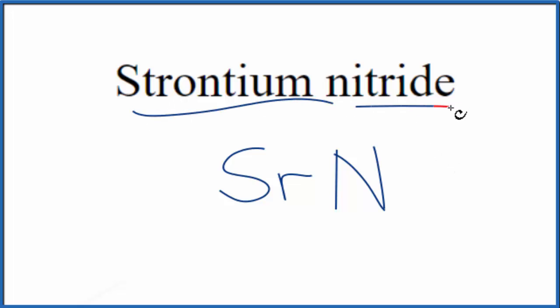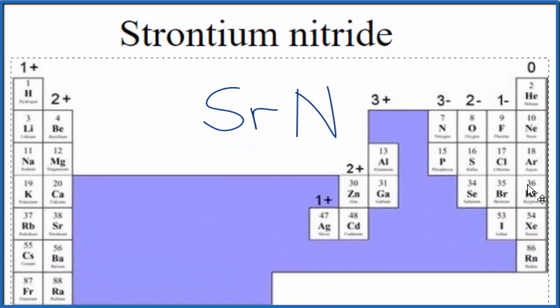Since we have a metal and a non-metal, this is going to be an ionic compound. We need to look up the charge, balance the charge, when we write the formula for strontium nitride.